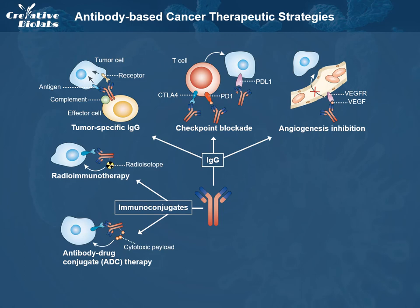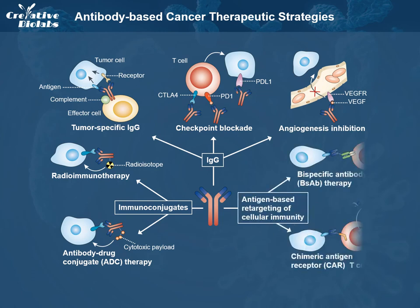Radioimmuno-conjugates deliver radioisotopes to cancer cells, whereas antibody-drug conjugates deliver highly potent toxic drugs to cancer cells. Antibody variable regions are also used to retarget immune effector cells towards cancer cells through bispecific monoclonal antibodies that recognize cancer cells with one arm and activating antigens on immune effector cells with the other arm, or through a gene therapy approach in which DNA for a monoclonal antibody variable region fused to signaling peptides is transferred to T cells, thereby rendering them chimeric antigen receptor T cells specific for the tumor.